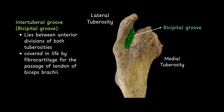The bicipital groove lies between the anterior divisions of the two tuberosities. It is covered in life by fibrocartilage for the passage of the tendon of the biceps brachii muscle.